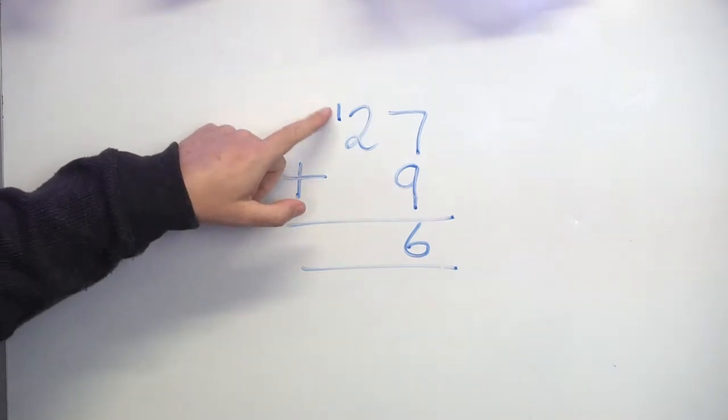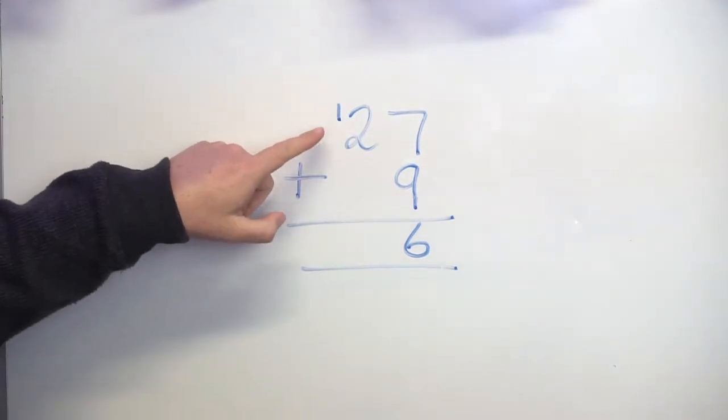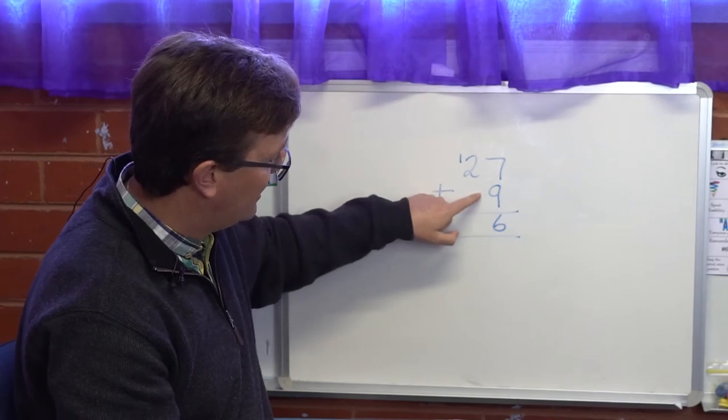Now that tells me that I have 1 lot of 10 plus 2 lots of 10, which is 3 lots of 10. There's nothing else to add in the tens column here.